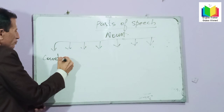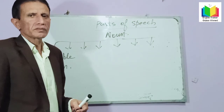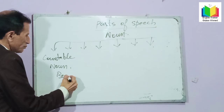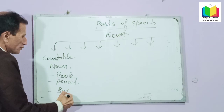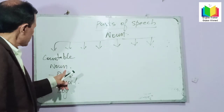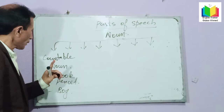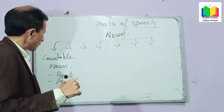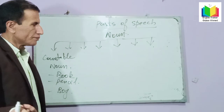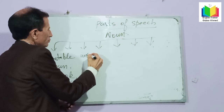The other noun is countable noun. Countable nouns are those nouns which can be counted, like book, pencil, boy. We can count these nouns and we can add an article before them — the book, the pencil, the boy, the boys, the books. We can also make plurals of these nouns because they can be counted easily.